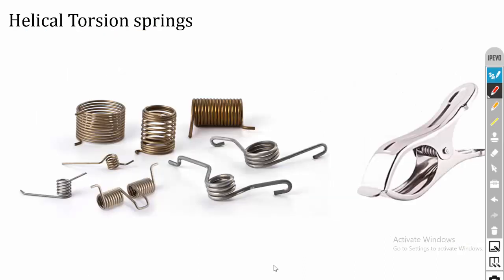The helical torsion spring absorbs torsional loads. One part is fixed to a board, and when a torsional load is applied on the opposite pin, it absorbs the twisting moment. These springs are used in exam pads, cloth clips, and hair clips — wherever a twisting moment needs to be absorbed.